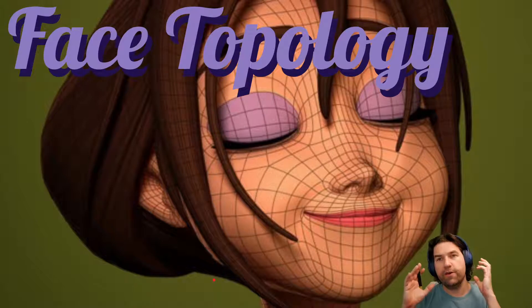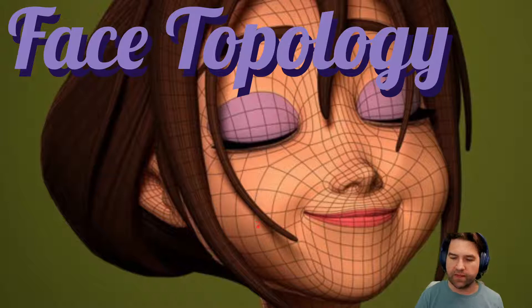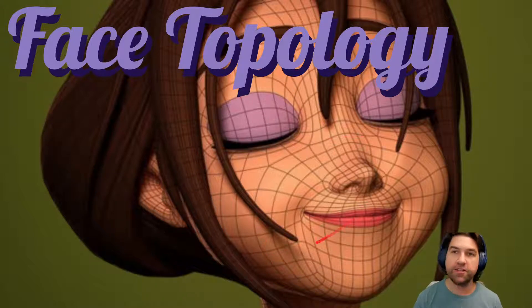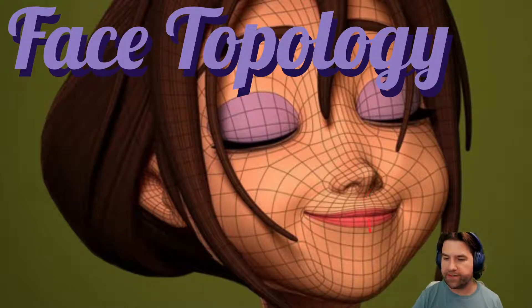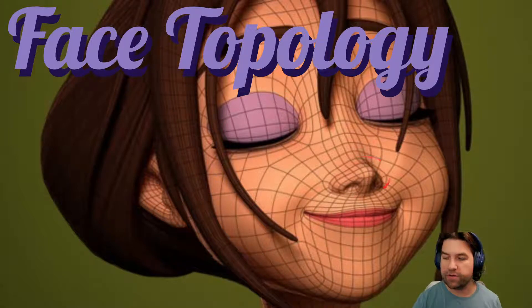When we're talking about face topology, it's really all about the loops. Look at this face. These directions of these lines aren't random and they weren't made capriciously. Every single one of these directions of lines, every single rotation you can see, is fitting around the mouth and these loops are going around the eyes and these loops are running up down the center of the face. This isn't by accident.